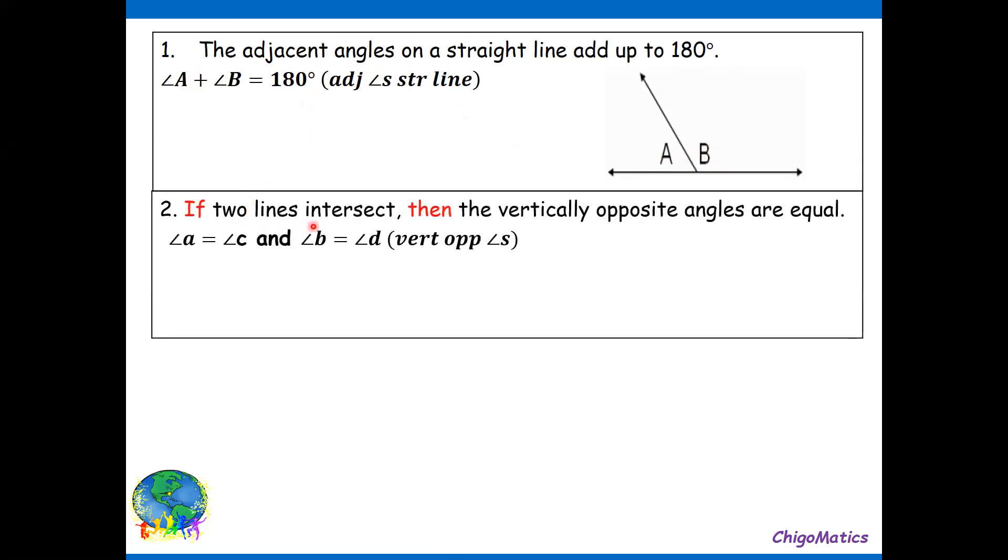If two lines intersect, then the vertical opposite angles are equal. So these are the two lines. A is equal to C, B is equal to D.